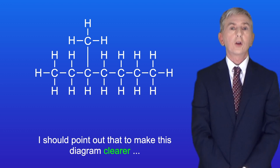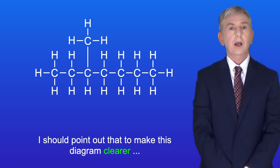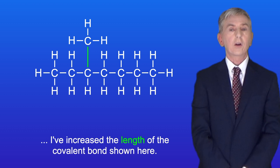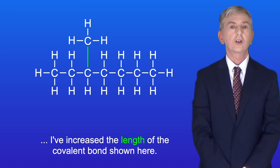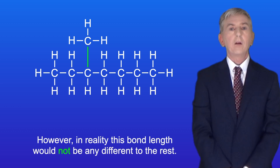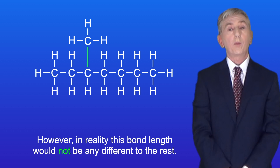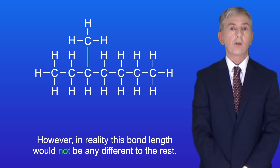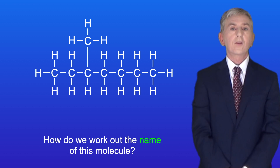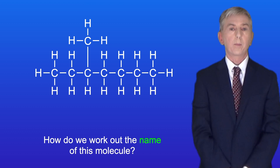I should point out that to make this diagram clearer I've increased the length of the covalent bond shown here. However in reality this bond length would not be any different to the rest. So how do we work out the name of this molecule?